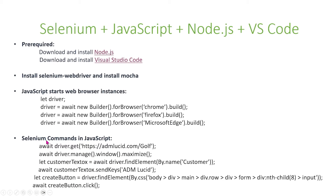Here are some basic Selenium commands you can use in JavaScript. The first is await driver.get, which brings us to the URL admlucid.com/golf. The second command manages and adjusts the window size so that it's maximized. The third uses find element by name ID 'customer' to find the customer text box, and then sends 'admlucid' into that text box. Next, we use a CSS selector to find the create button, then use await createButton.click(), which clicks the button and submits the customer entry.